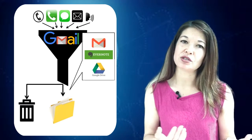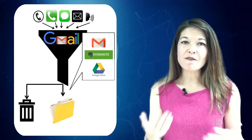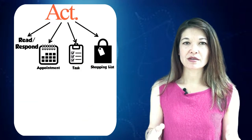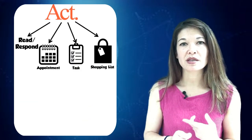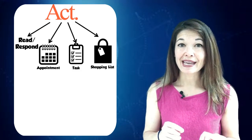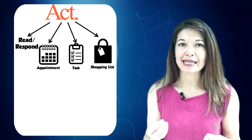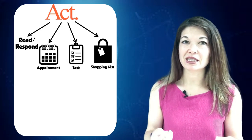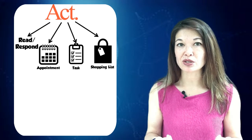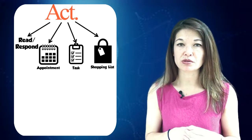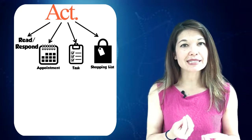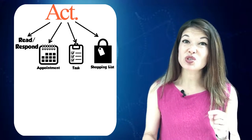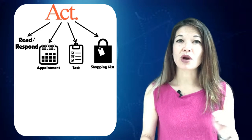For information that I need to act on, there is another decision point. The first thing is: can I deal with it in five minutes or less? If the answer is yes, then I do it right away or I keep it in my inbox until it gets done. This includes responding to emails or reading short articles. If I can't get it done in five minutes or less, then I have to move it to my task list. Sometimes I'm also required to create an appointment or add something to a shopping list.